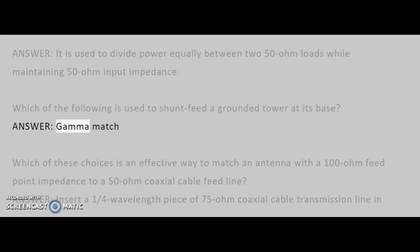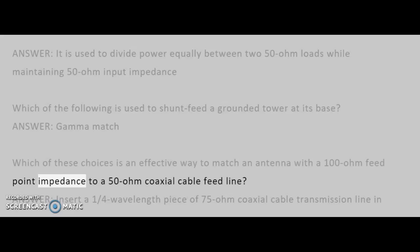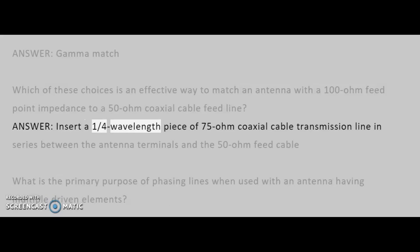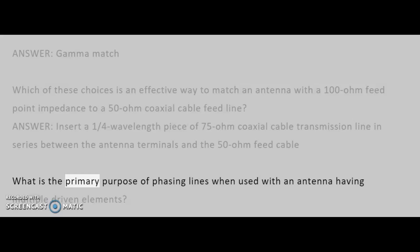Which of these choices is an effective way to match an antenna with a 100 ohm feed point impedance to a 50 ohm coaxial cable feed line? Answer: Insert a quarter-wavelength piece of 75 ohm coaxial cable transmission line in series between the antenna terminals and the 50 ohm feed cable.